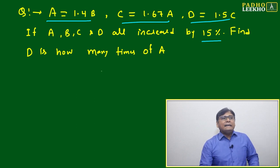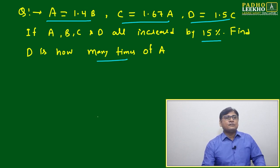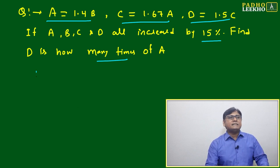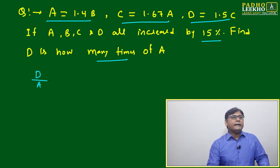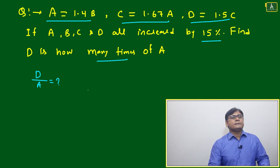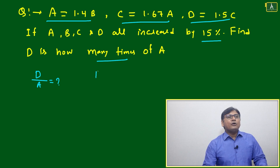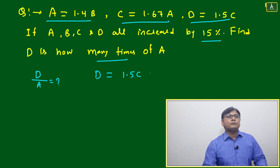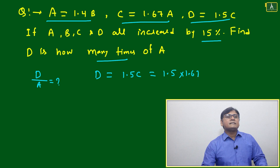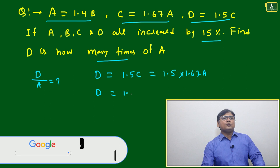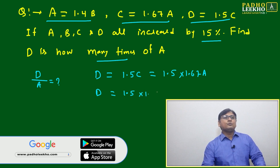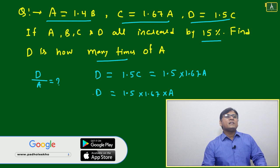The question asks: d is how many times a? Not percentage — how many times means d divided by a. What will be the value of d by a? It is a kind of ratio. To find d by a, express d in terms of a. D is originally given as 1.5c, which converts to 1.5 times 1.67a.